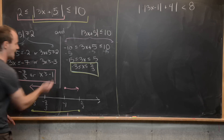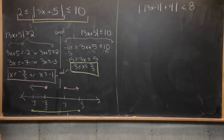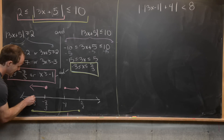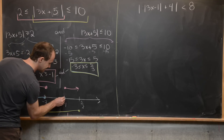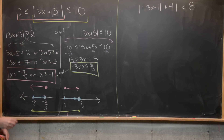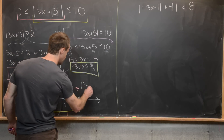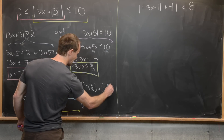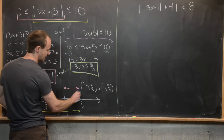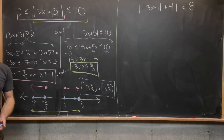We have an AND statement between these two from the beginning, so we want everything shaded both pink and yellow. Shading that blue, we get negative 3 to negative 7 thirds, and then negative 1 up to 5 thirds — those two pieces are our final solution. In interval notation, that's the union of the two intervals: negative 3 to negative 7 thirds, union, negative 1 up to 5 thirds.